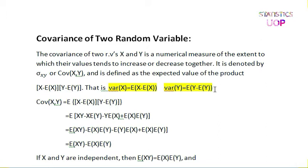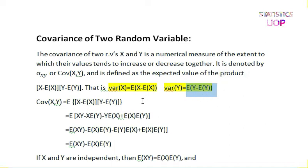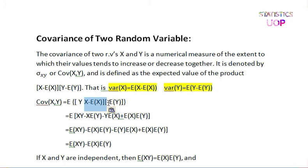You will see that the covariance equation is the expected value of X minus X's mean, times Y minus the expected value of Y. We have done this: this is the variance of X's formula and this is the variance of Y's formula. So when you want to find the covariance of X and Y, you have two variables — X minus mean of X, Y minus mean of Y. Now let's solve the covariance by multiplying these two brackets.